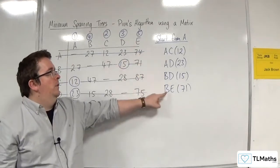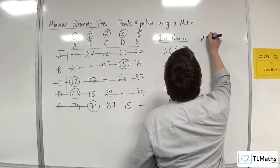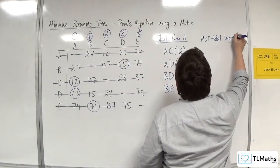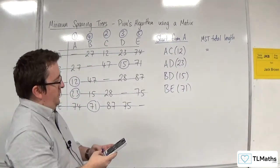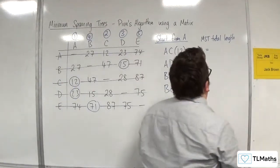So these are the edges in my minimum spanning tree. So the minimum spanning tree total length or total weight: 12 plus 23 plus 15 plus 71. 21, 121.